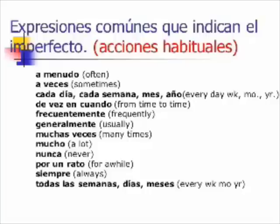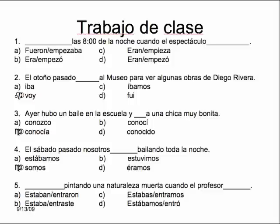The answer to number one is D, 'fui,' because it only took place one time — last summer. It wasn't every day or every summer; it was last summer, which is why it's the preterite. For number three: 'Ayer hubo un baile en la escuela y blank a una chica muy bonita' — the answer is B, 'conocí a una chica muy bonita.' The key word is 'ayer,' but even without it, you use logic: how many times do you meet a person when you first become acquainted? One time — that's why we use the preterite.